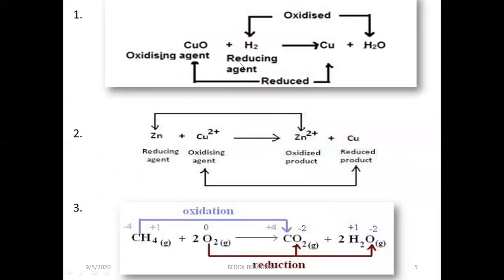These are some examples involving redox reactions. The first is copper oxide plus hydrogen gives us copper plus H2O. Here, oxygen is removed from copper oxide and given to hydrogen. So, hydrogen is oxidized while copper oxide is reduced to Cu. In the second example, zinc plus Cu²⁺ gives us Zn²⁺ plus Cu. Here, zinc has zero charge. When it loses two electrons, it becomes Zn²⁺ — this is oxidized. While Cu²⁺, when it gains two electrons, becomes Cu — so this is reduction.